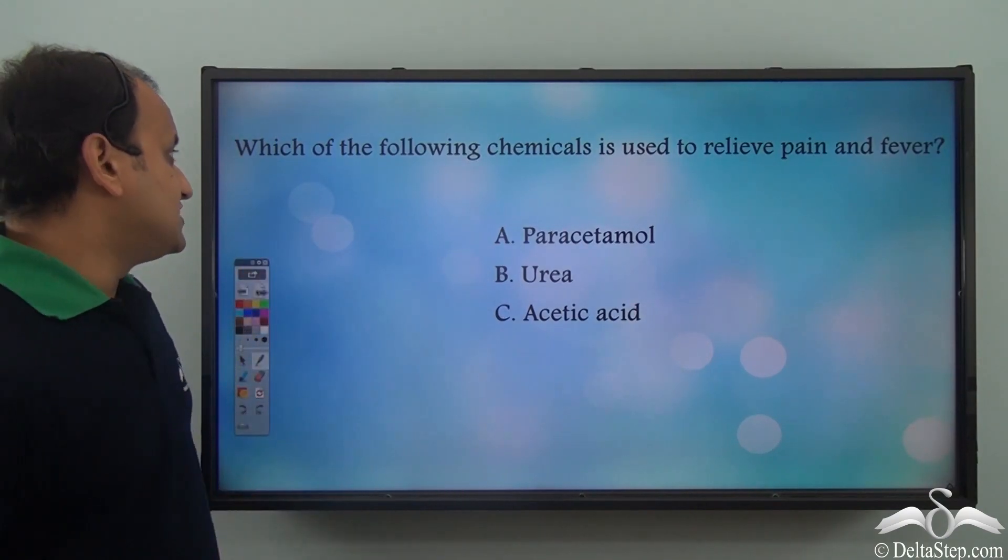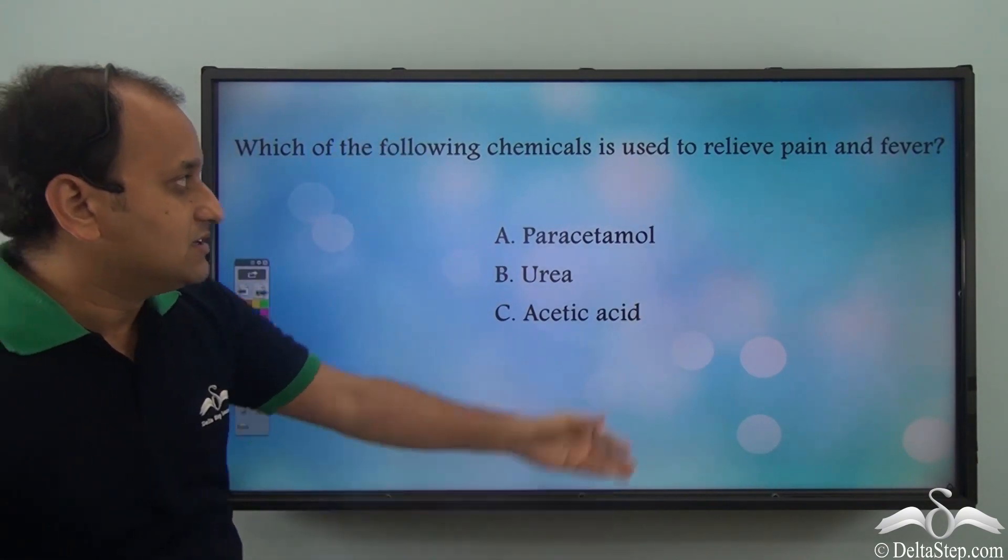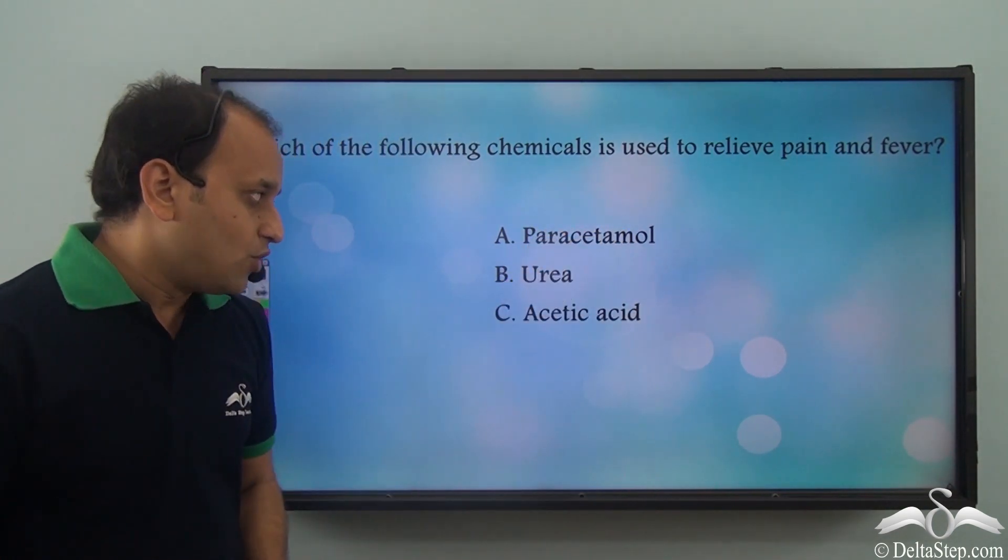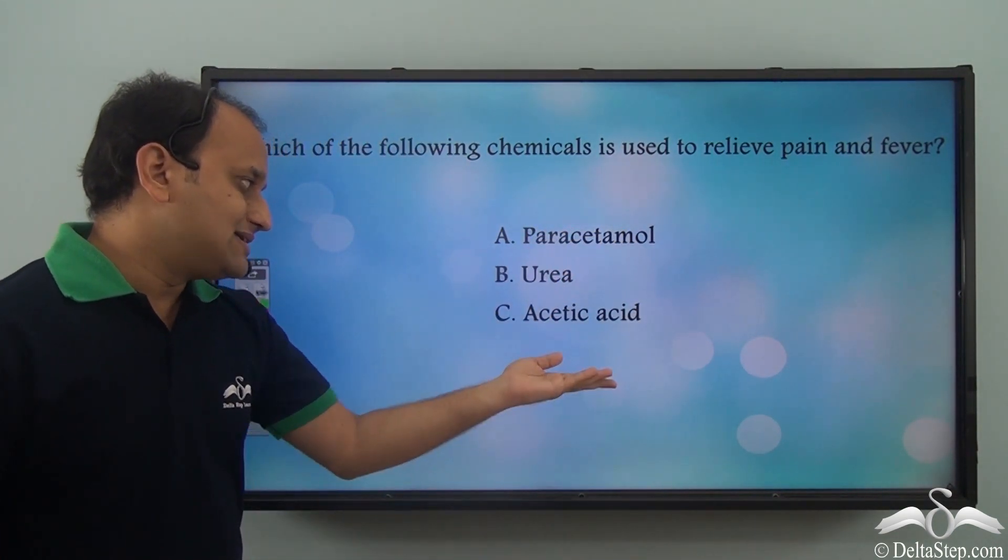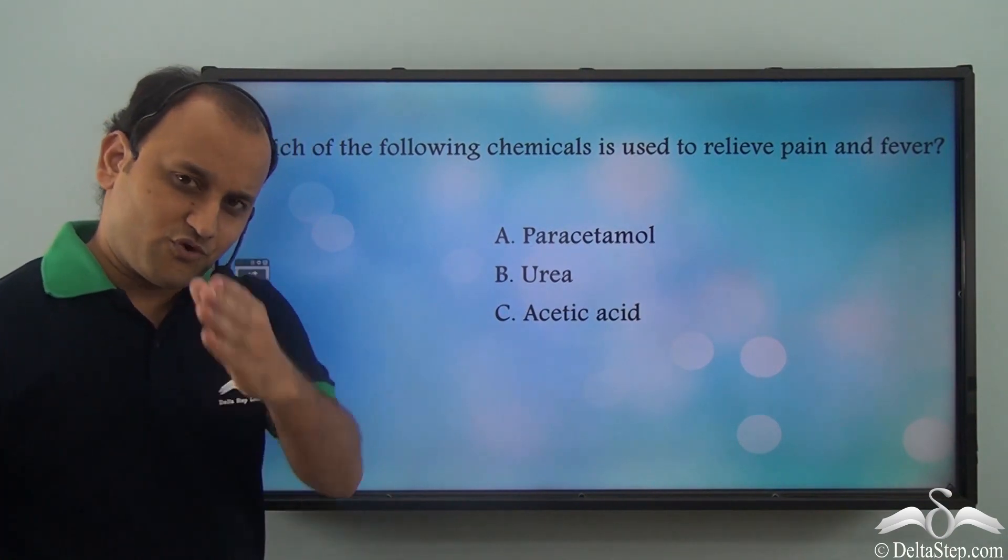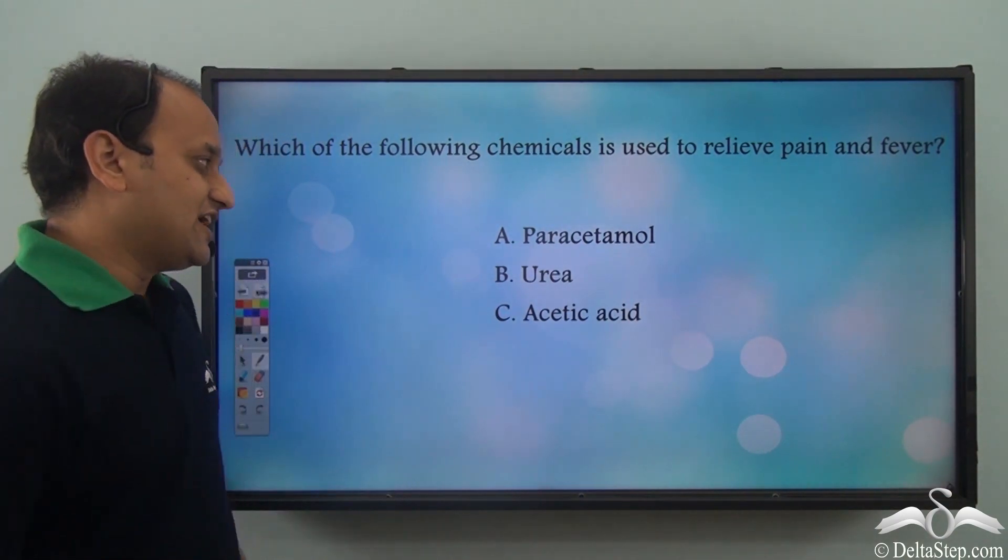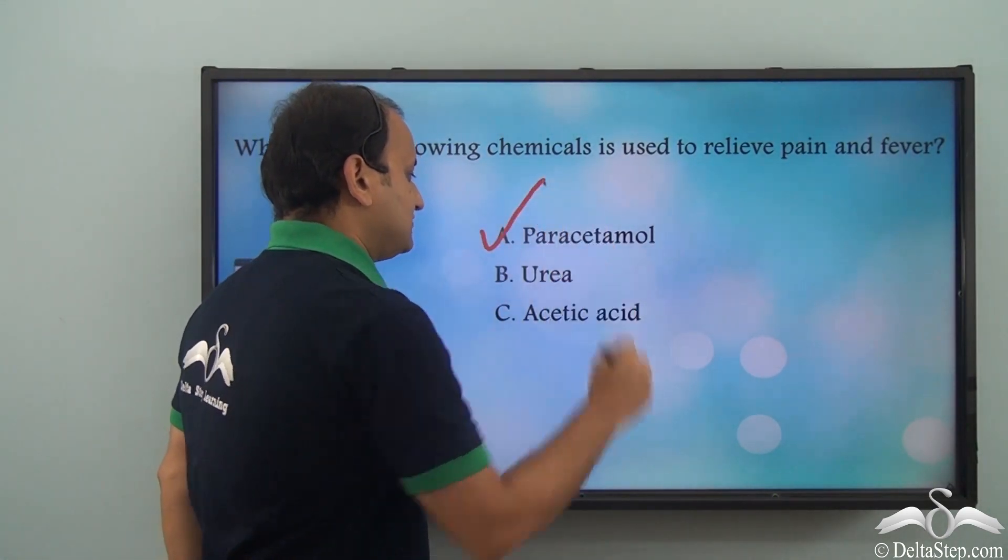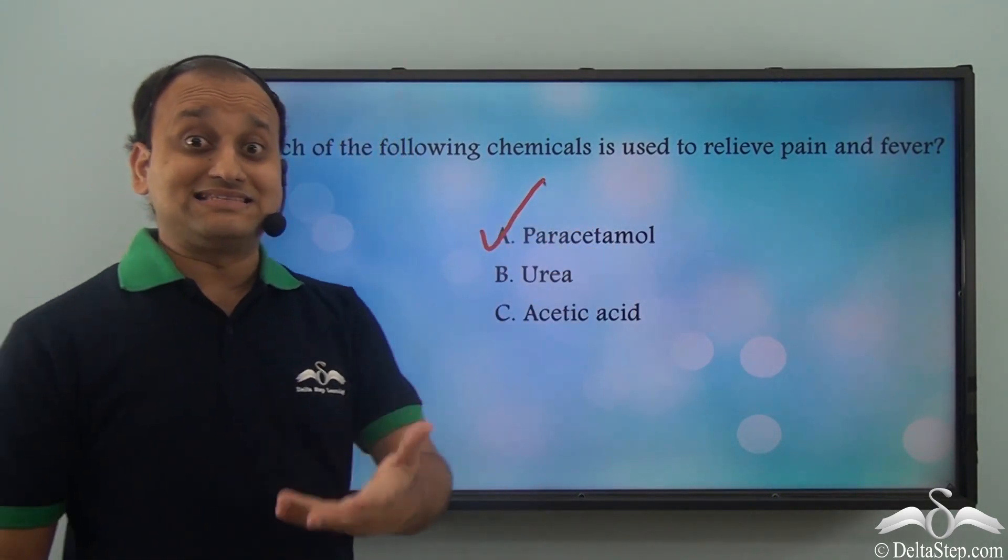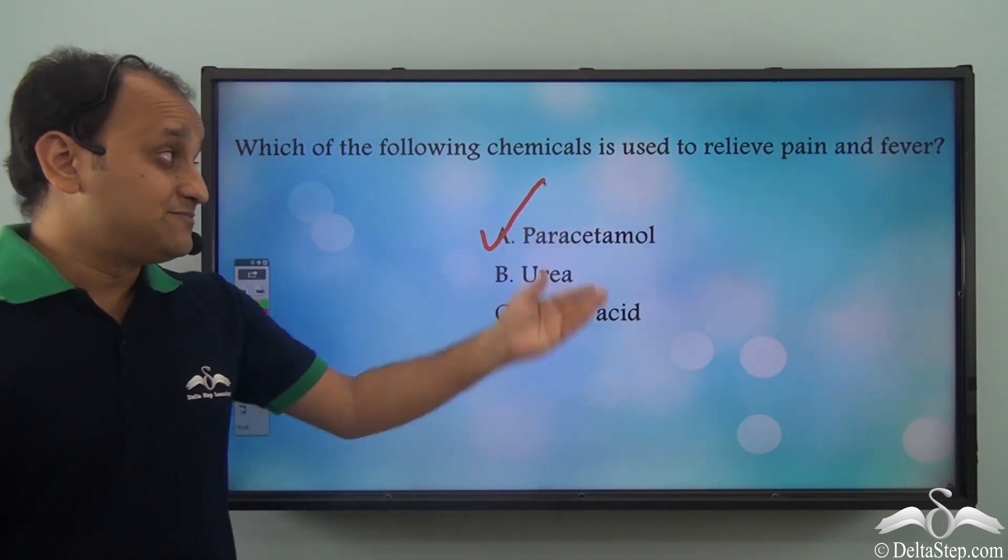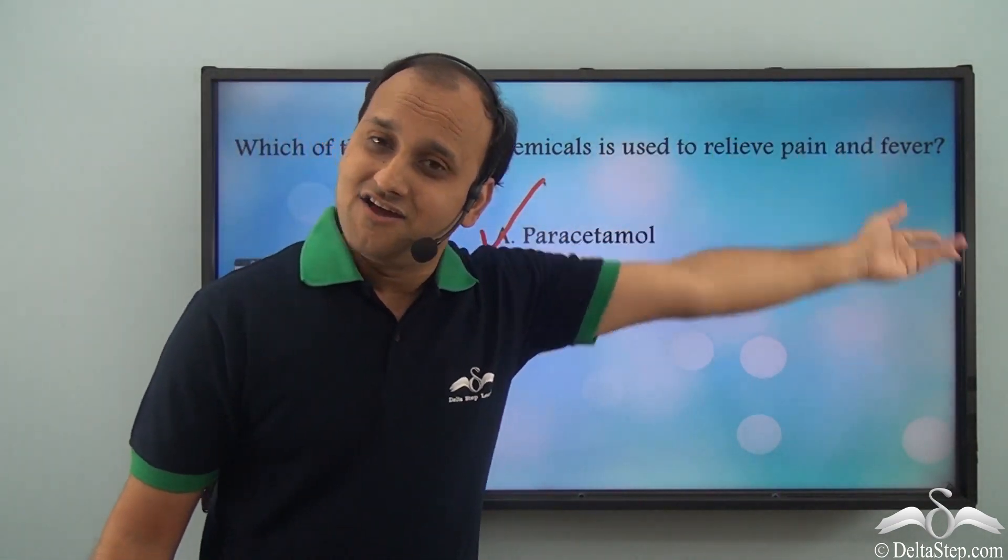So can you answer this? Which of the following chemicals is used to relieve pain and fever? Is it paracetamol, is it urea, or is it acetic acid? What do you think? Well, the answer is paracetamol.